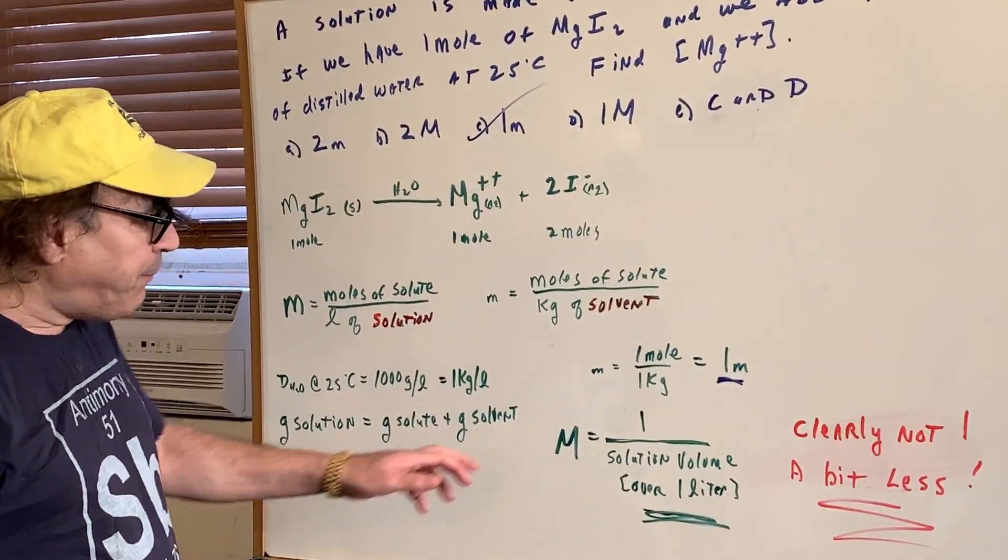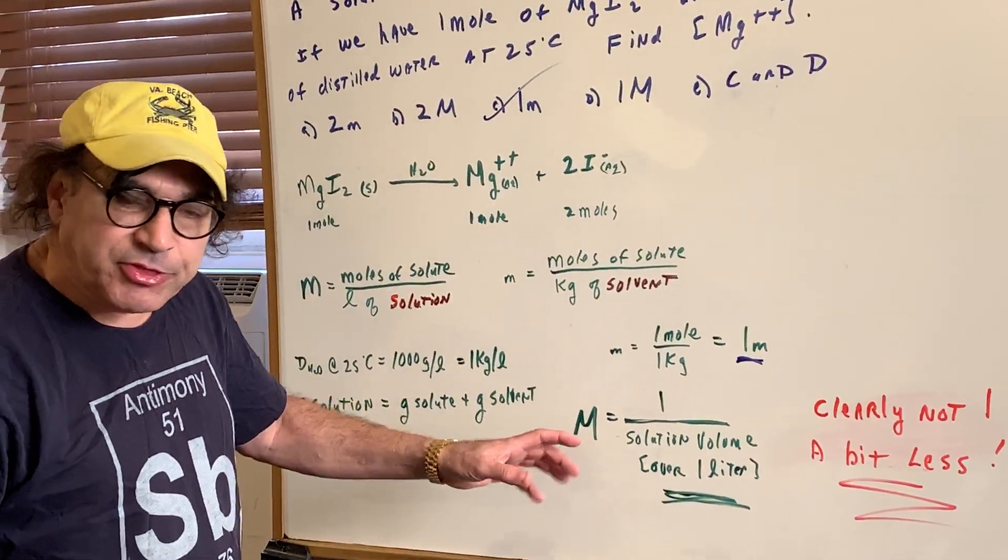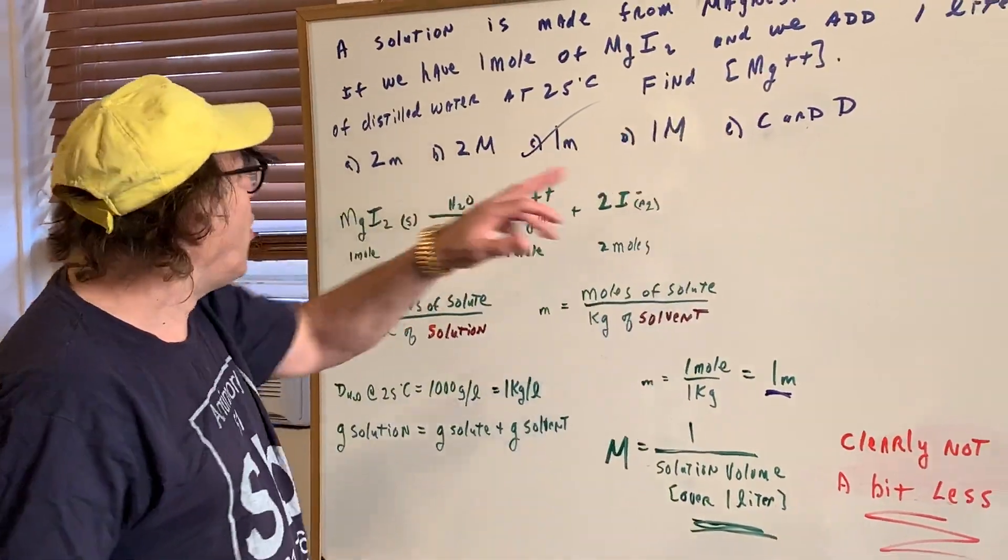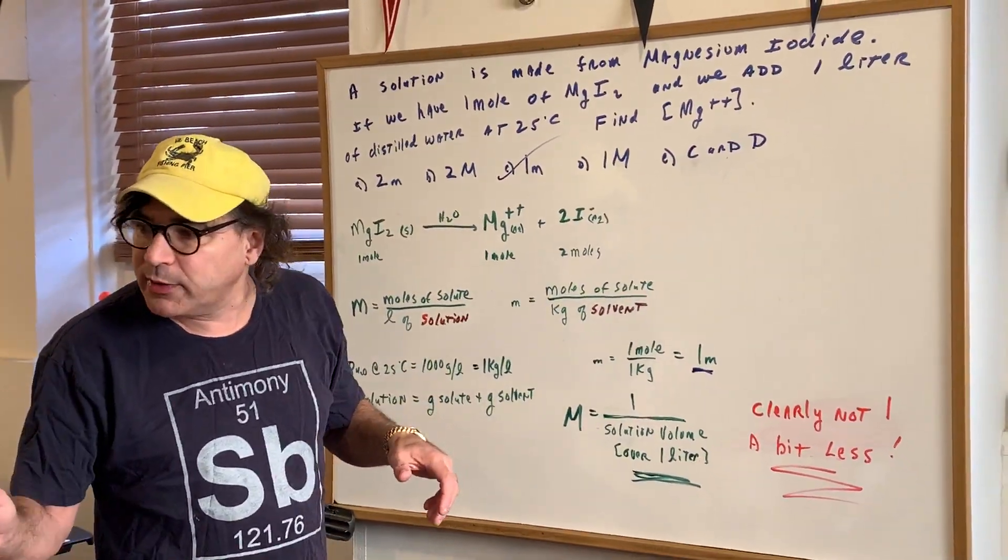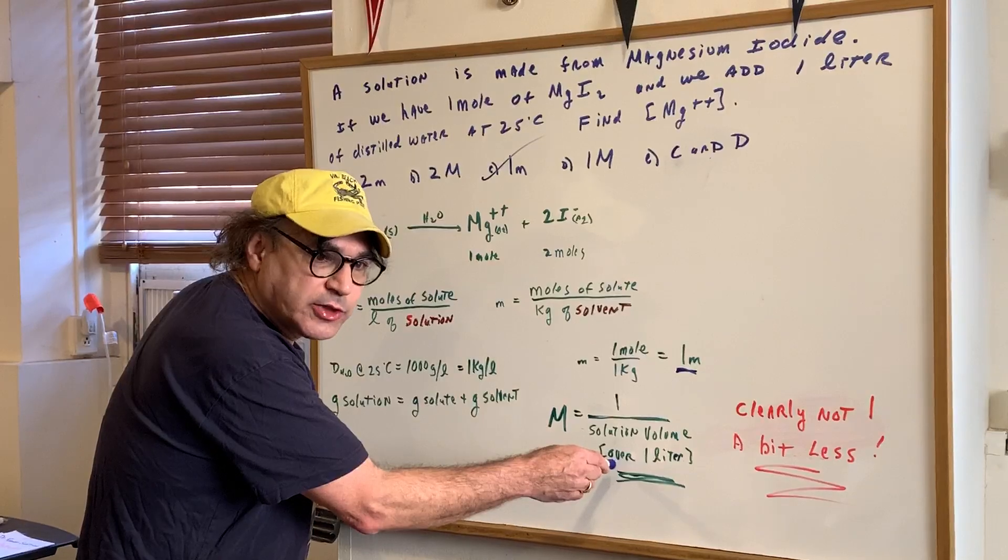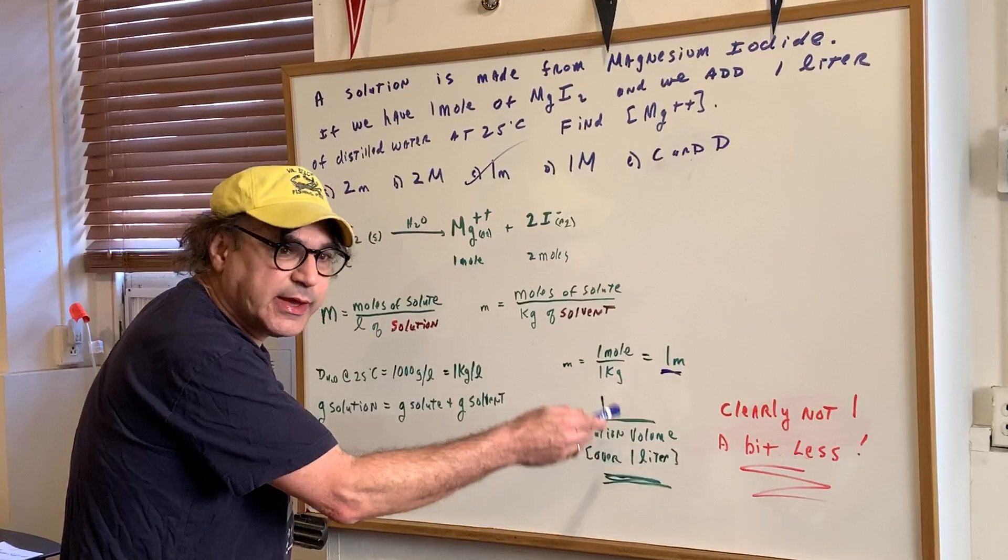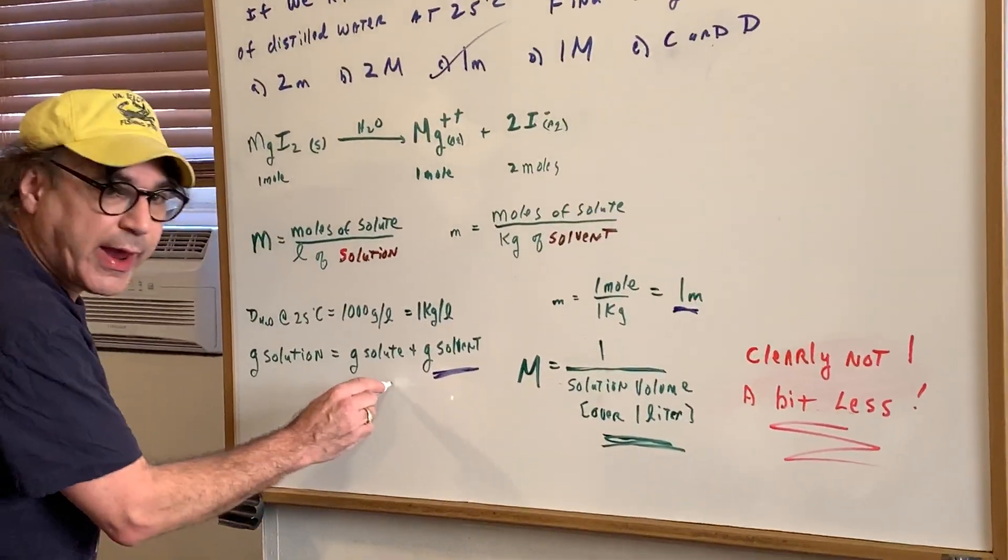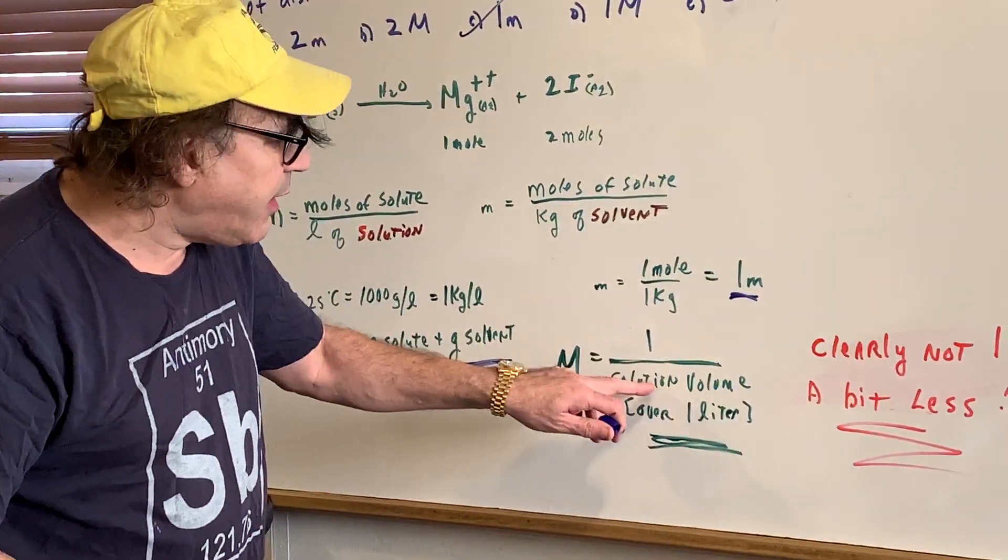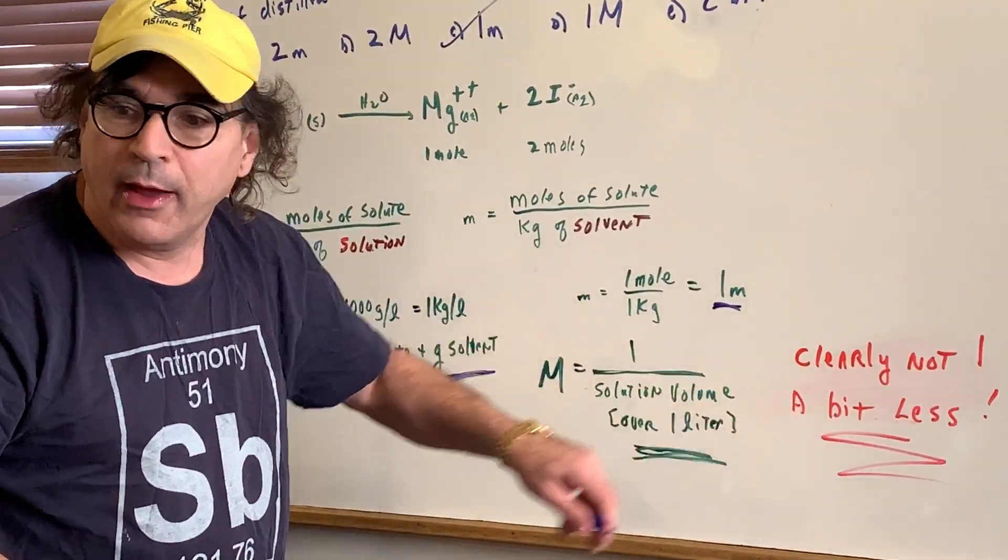How about big M? Well big M is the moles, one mole, over the liters of solution. But the solution is made up of the solvent and the solute. I didn't say one liter of solution. I said one liter of the solvent, the water. So therefore the solution volume would be a little bit more than one liter. It would be the one liter plus the amount added. So clearly if this denominator is larger than one, it pulls the answer to be a little bit less than one.